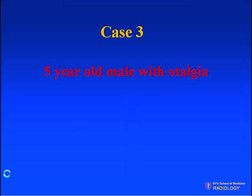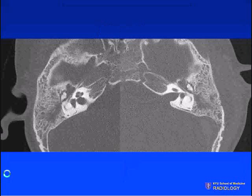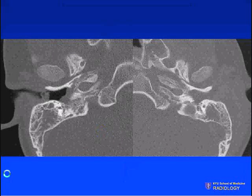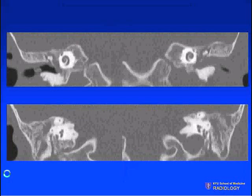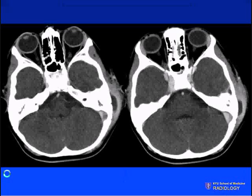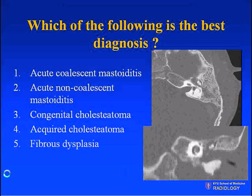Case number three: a five-year-old male who presented with otalgia. Here are axial images, further axial images, coronal images, and soft tissue windows through the temporal bone. Which of the following is the best diagnosis? Number one, acute coalescent mastoiditis; number two, acute non-coalescent mastoiditis; number three, congenital cholesteatoma; number four, acquired cholesteatoma; number five, fibrous dysplasia. Here is the key axial image and the coronal image.